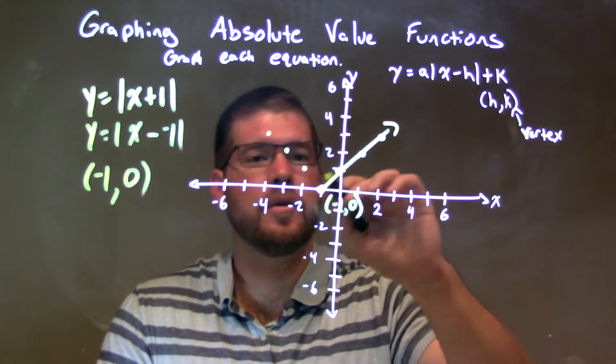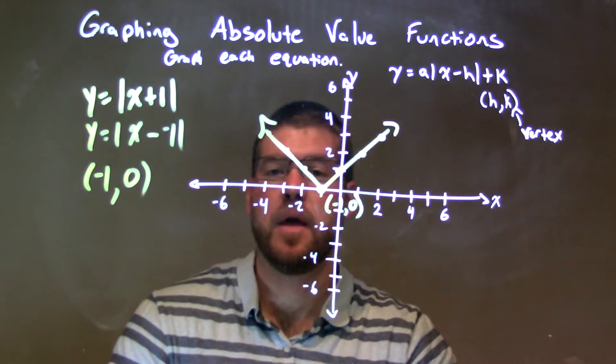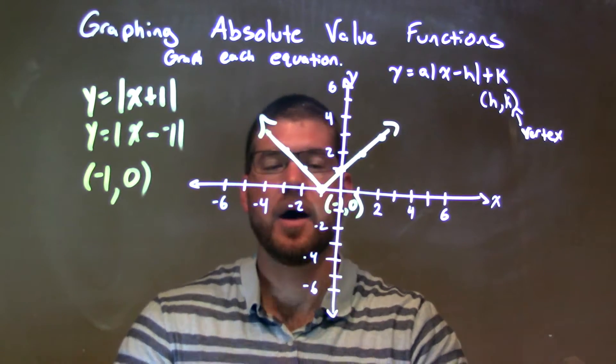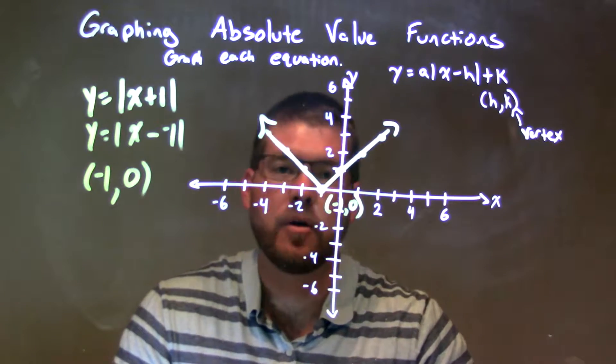We know these lines go on forever. There we have our graph, our absolute value graph. Again, positive a value at the front, so we have a normal V-looking graph.